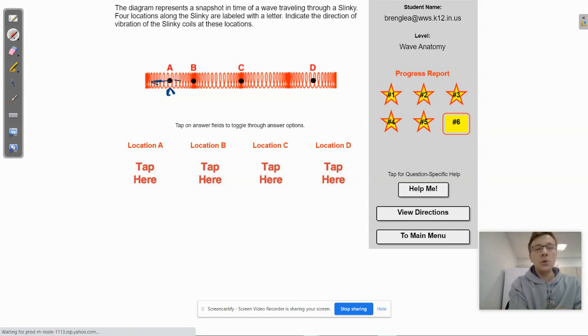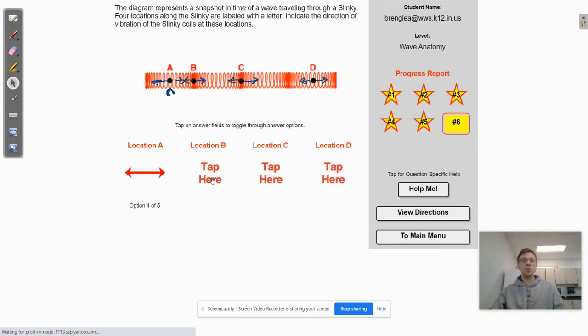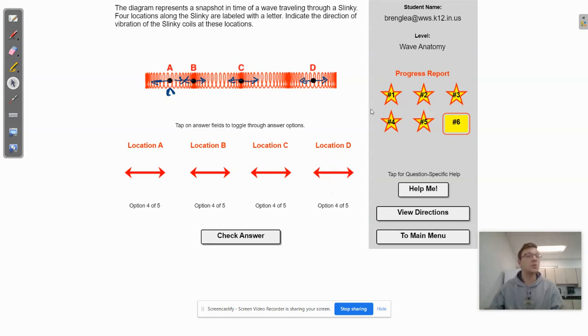So each of these, doesn't matter what point you're looking at, on this A, B, C, or D, all of these are going to vibrate horizontally or parallel with the direction that the wave is traveling. So we will look for the horizontal. Now I should be careful about using the word horizontal because technically it's parallel to the direction of the wave travel. So if I was holding the slinky vertically and I did the same thing and I pulsed it, well, the wave is now moving vertically. So the particles would vibrate vertically. So just be careful about that.